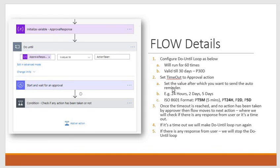For example, if you need to send a reminder after two days, you set the timeout on the approval action to two days — after two days the approval action will expire. For the Do Until loop, depending on how many reminders you want to send, let's say 10 to 15, that's 2 times 15 equals 30 days, so you set the loop limit to 30 days. You can also set how many times the loop will run; by default it is 60, and you can change it to a maximum of 5000.